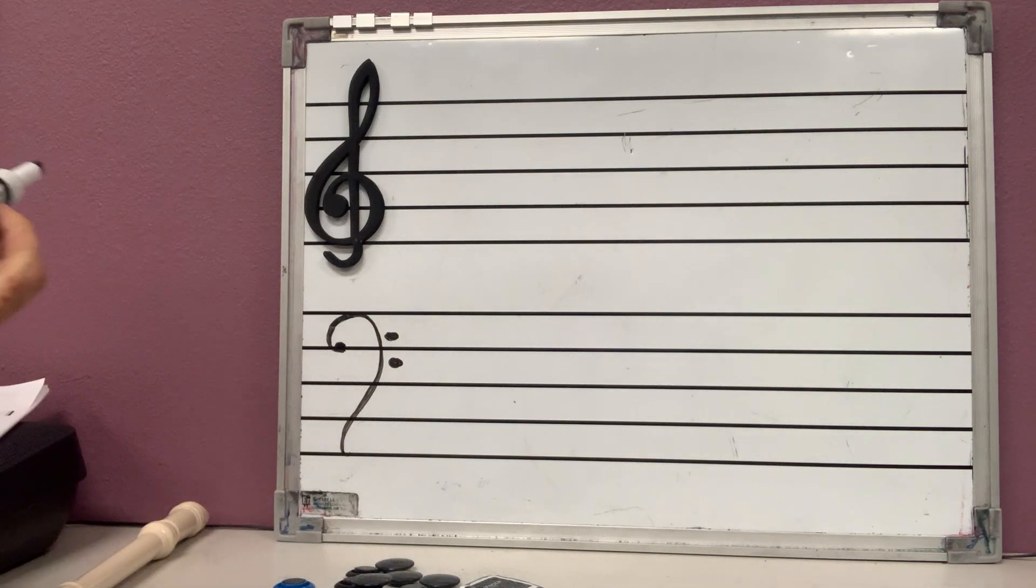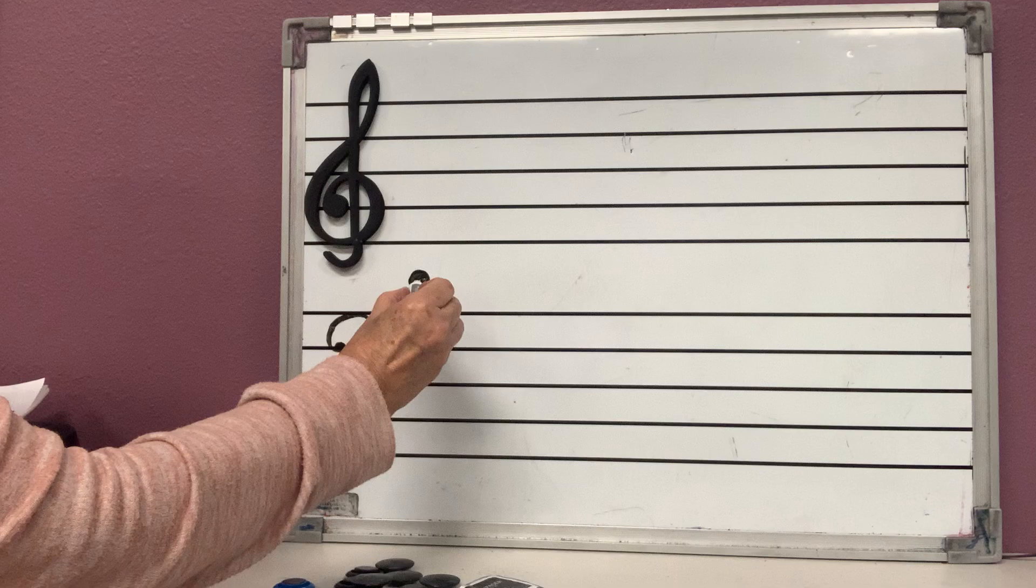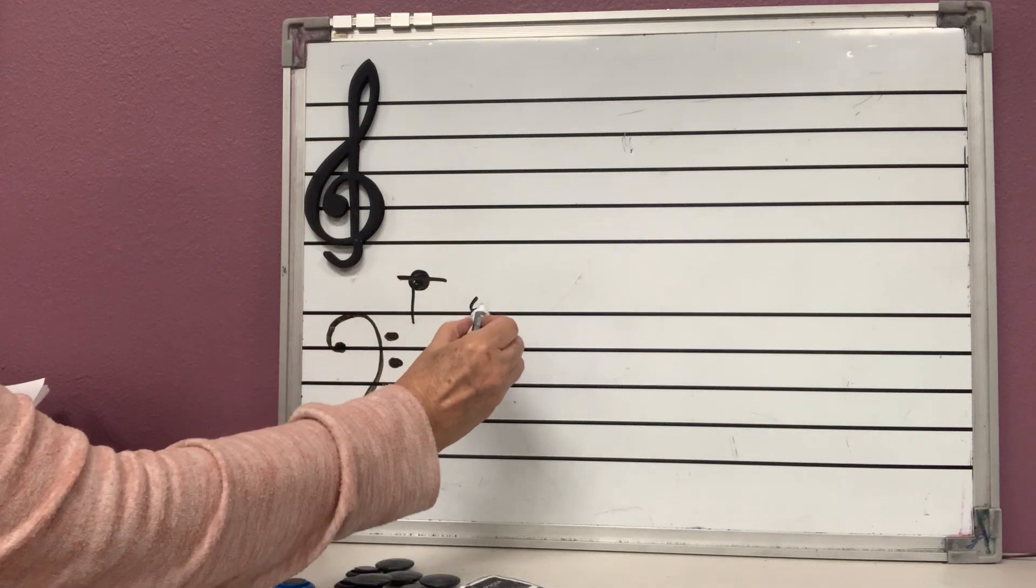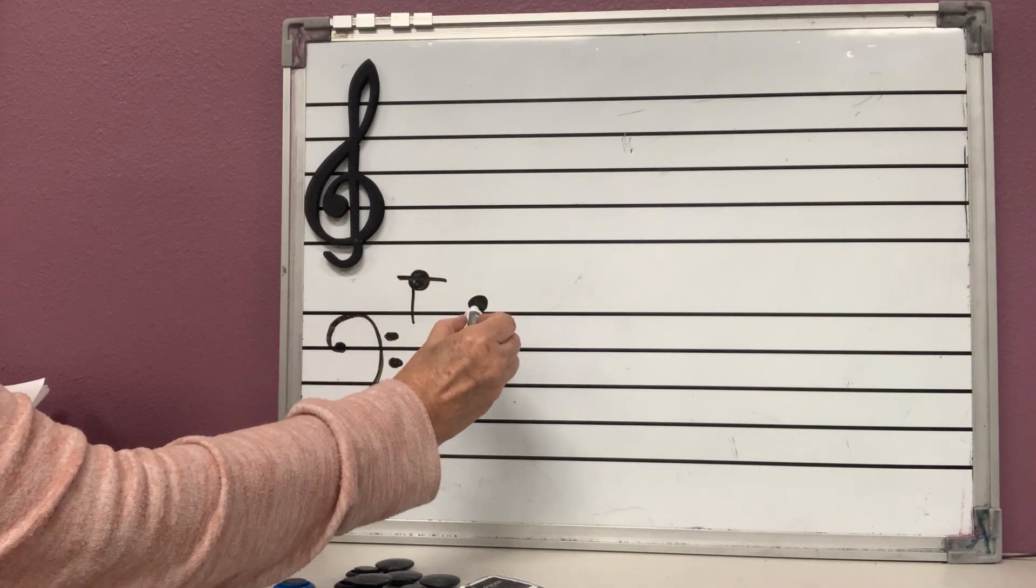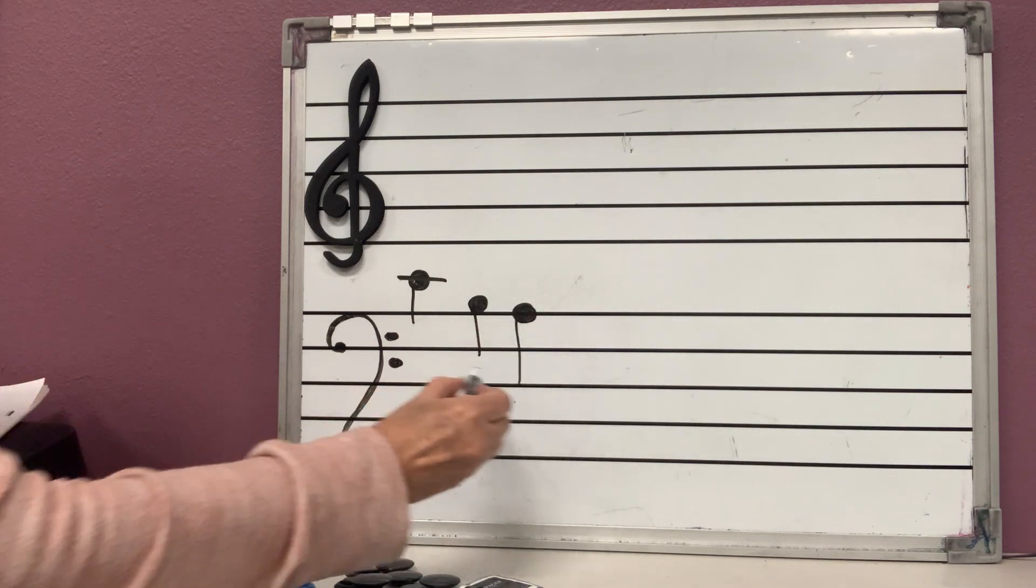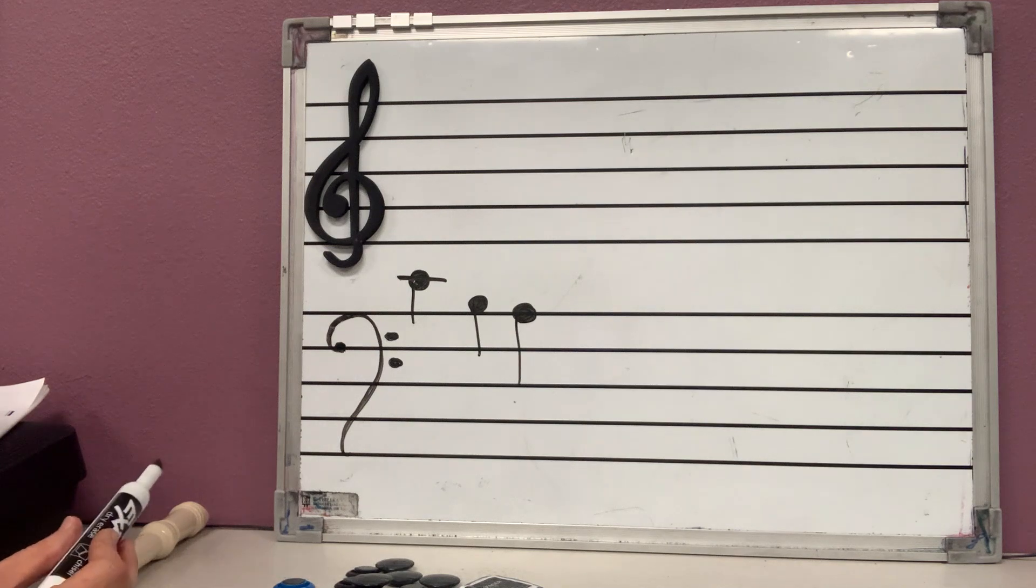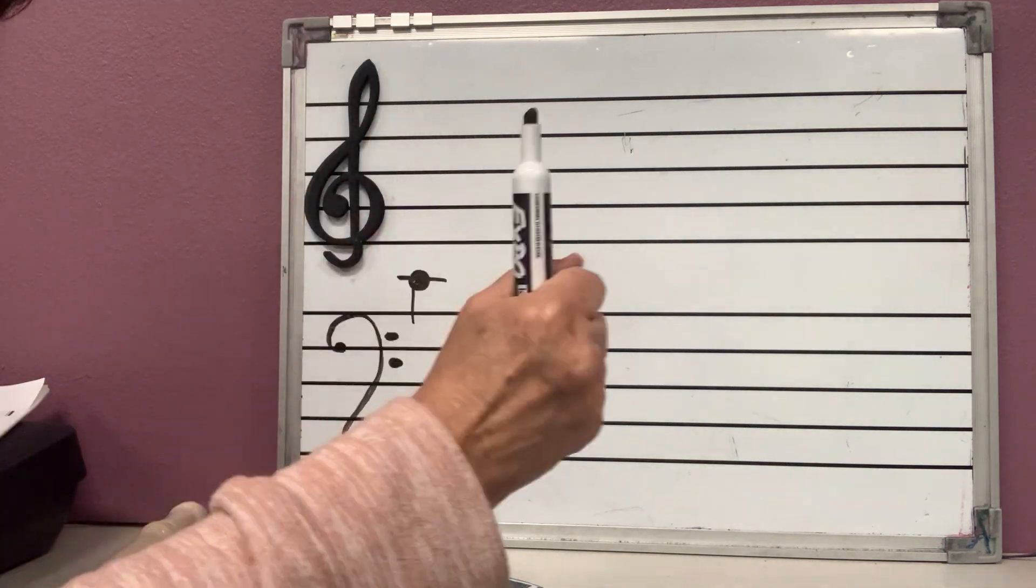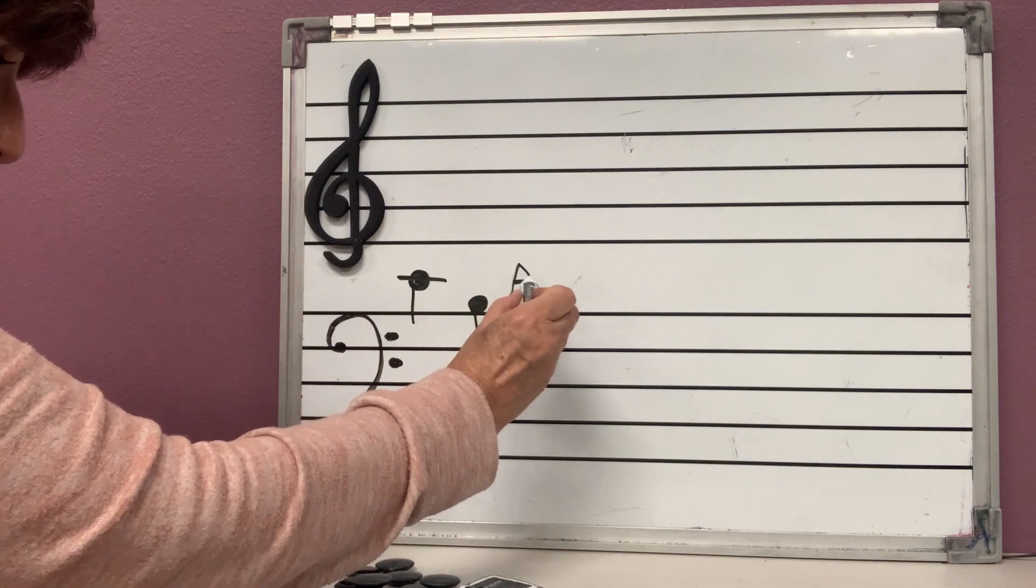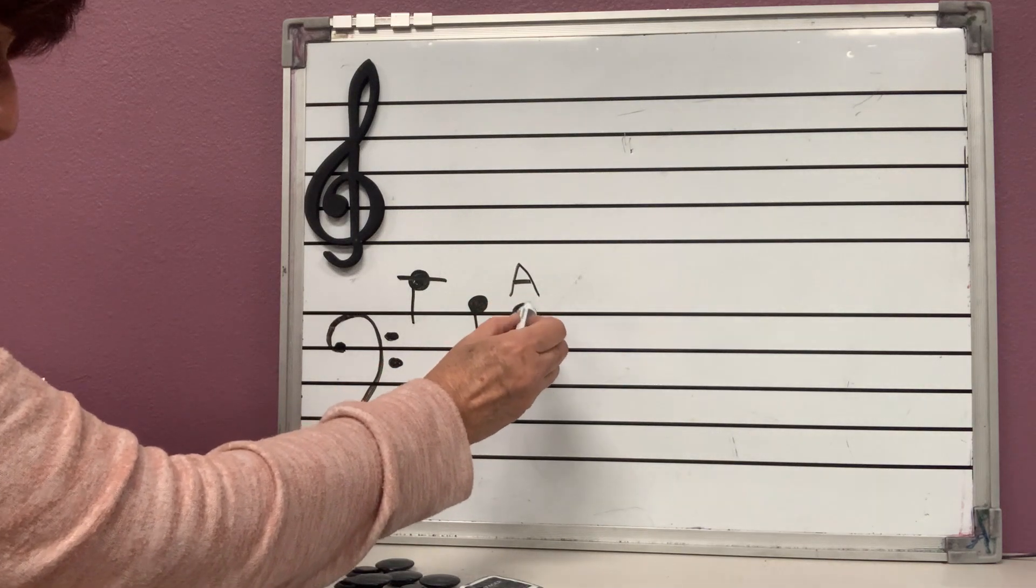We know on bass clef, we knew this. If this one is C, and this one is the baby boy, and the last line is A, because what do we say? Good boys do fine, always! So the last line is always A. Good boys do fine, always!